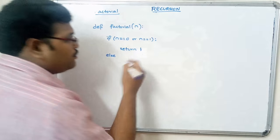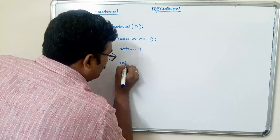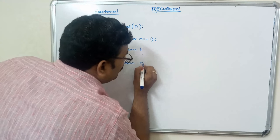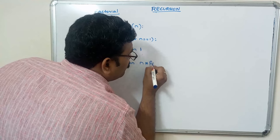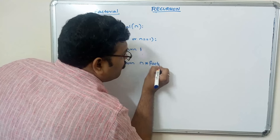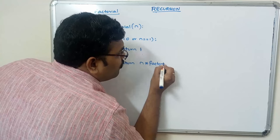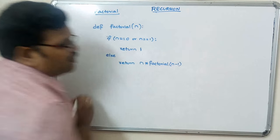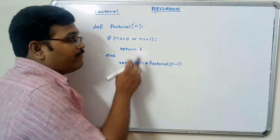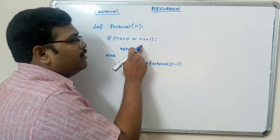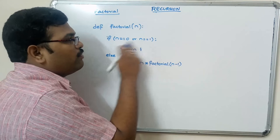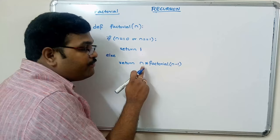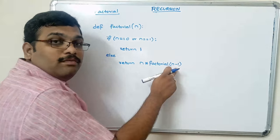In the else part, we repeat the same procedure: return n * factorial(n - 1). That means for n=5, since 5 is not equal to zero and not equal to one, it returns 5 into factorial of 4. In the next iteration it becomes 5 into 4 into factorial of 3.